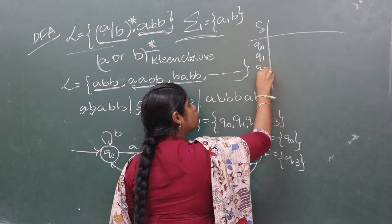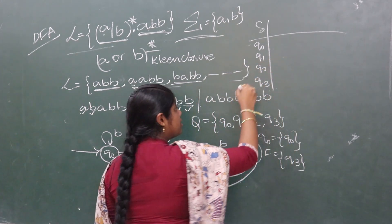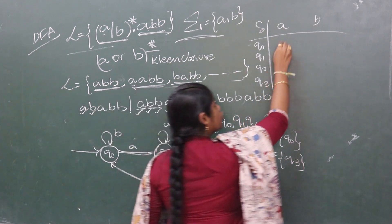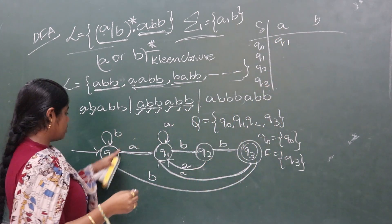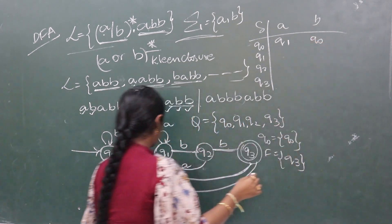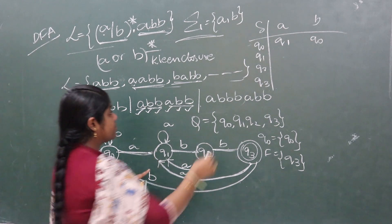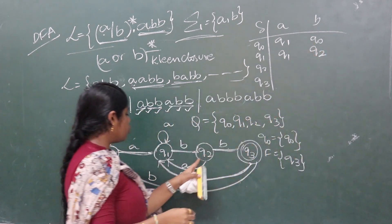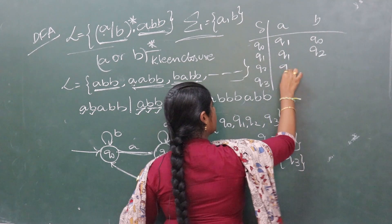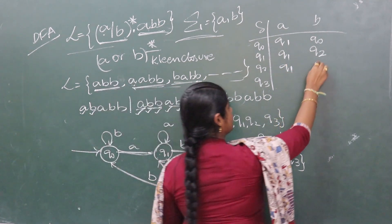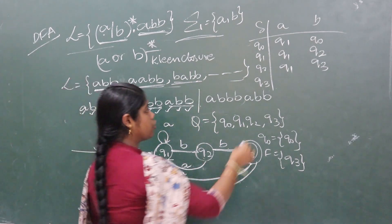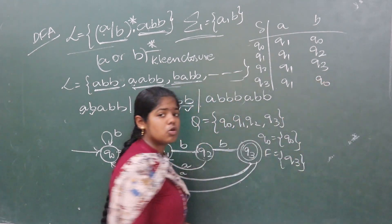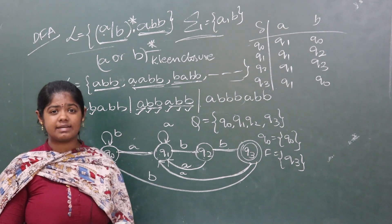The transition table: Q0 on A goes to Q1, Q0 on B goes to Q0. Q1 on A goes to Q1, Q1 on B goes to Q2. Q2 on A goes to Q1, Q2 on B goes to Q3. Q3 on A goes to Q1, Q3 on B goes to Q0. In this way, the deterministic finite automata is constructed. Thank you.